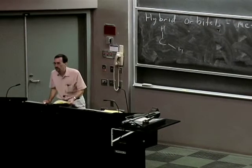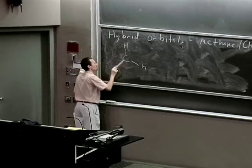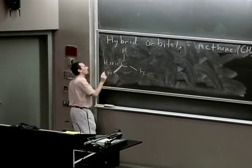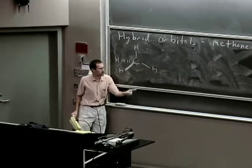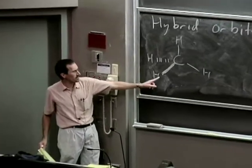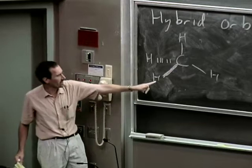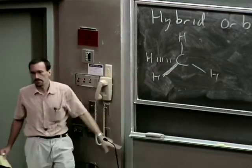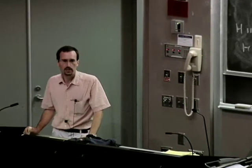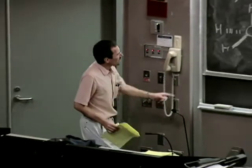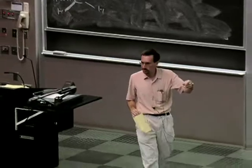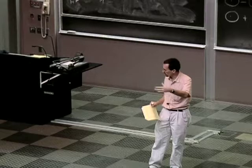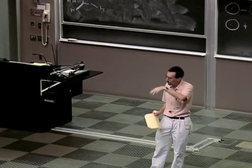The molecule methane has a tetrahedral arrangement of four hydrogen atoms around a central carbon. I'm representing the hydrogens in the plane of the blackboard with normal bonds, the hydrogen coming out of the blackboard with a wedged bond, and the hydrogen going back into the blackboard with a dashed bond. In order to think about forming four bonds in methane, you have three p orbitals, but those p orbitals aren't in tetrahedral relationships to each other — they're at right angles.